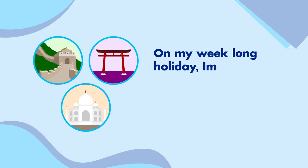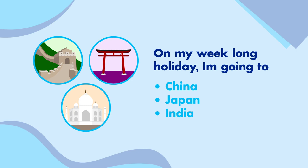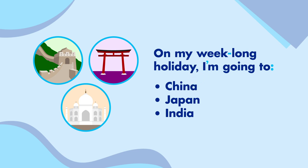Now let's write out another sentence. 'On my week-long holiday, I'm going to China, Japan, and India.' This part of the sentence is an introduction to a list, and this part is the list itself, so let's separate them with a colon. Also, 'week-long' should be a compound adjective linked with a hyphen. Finally, 'I'm' is a contraction of 'I am', so it needs an apostrophe. Wonderful!